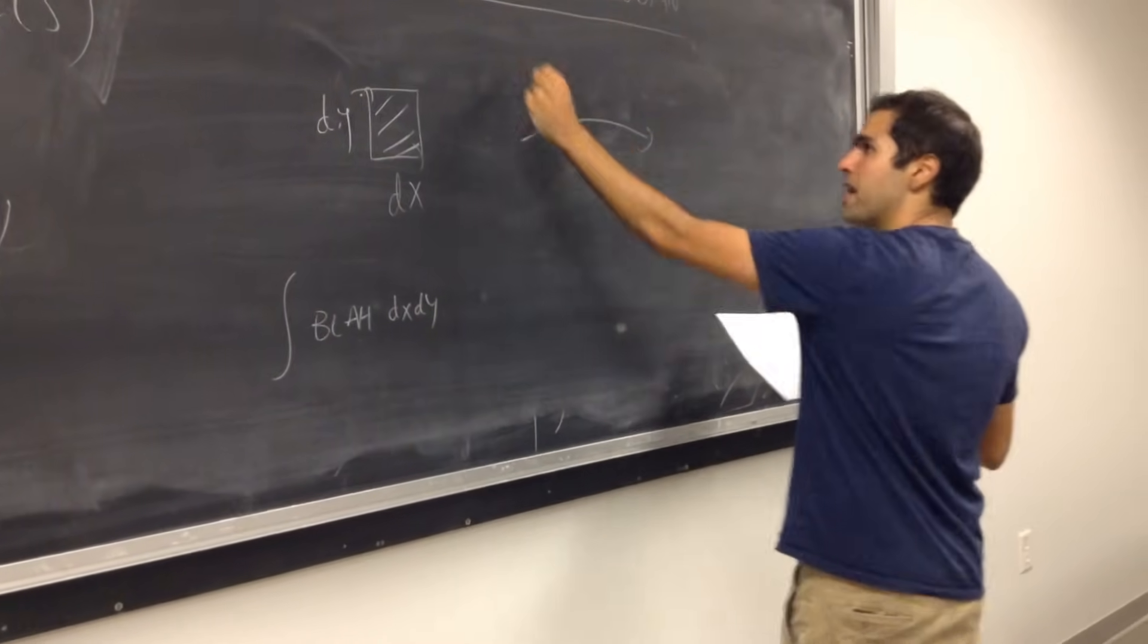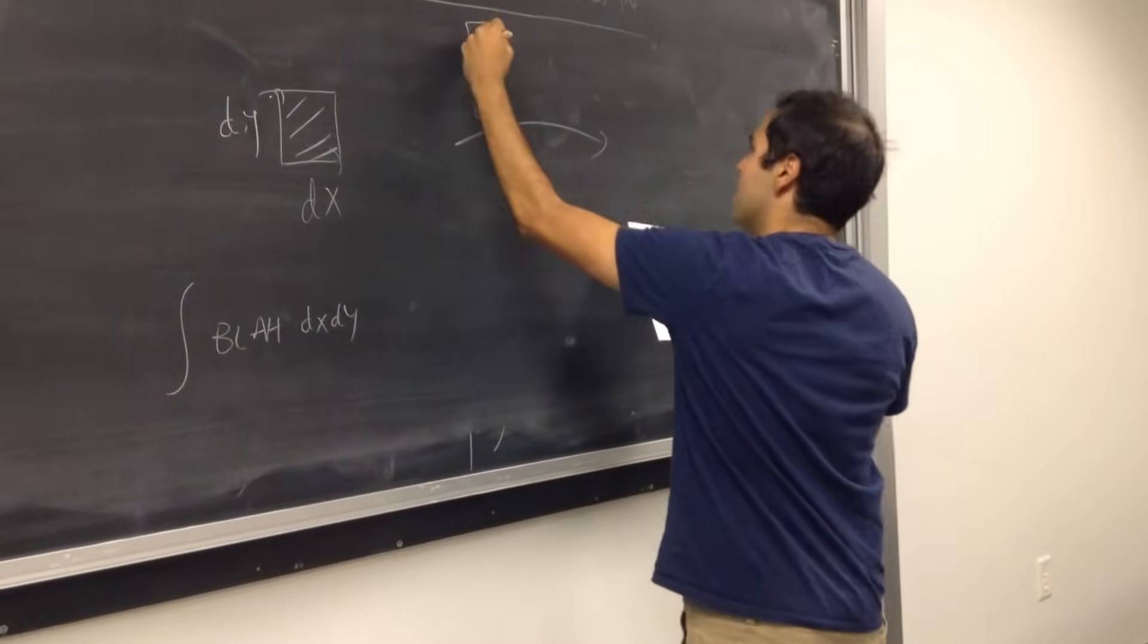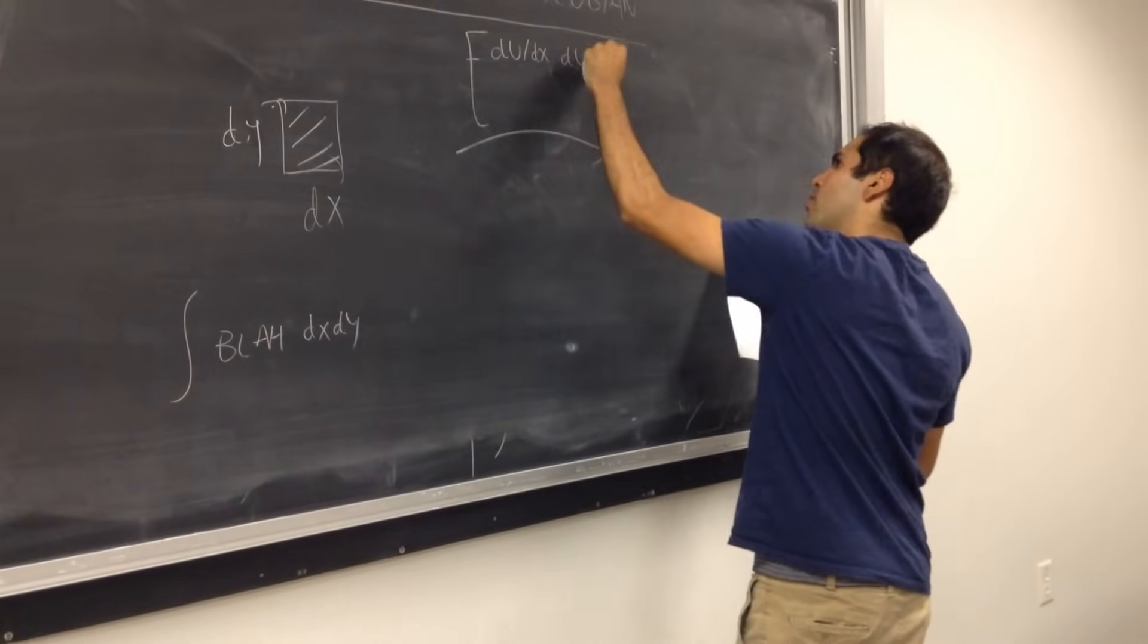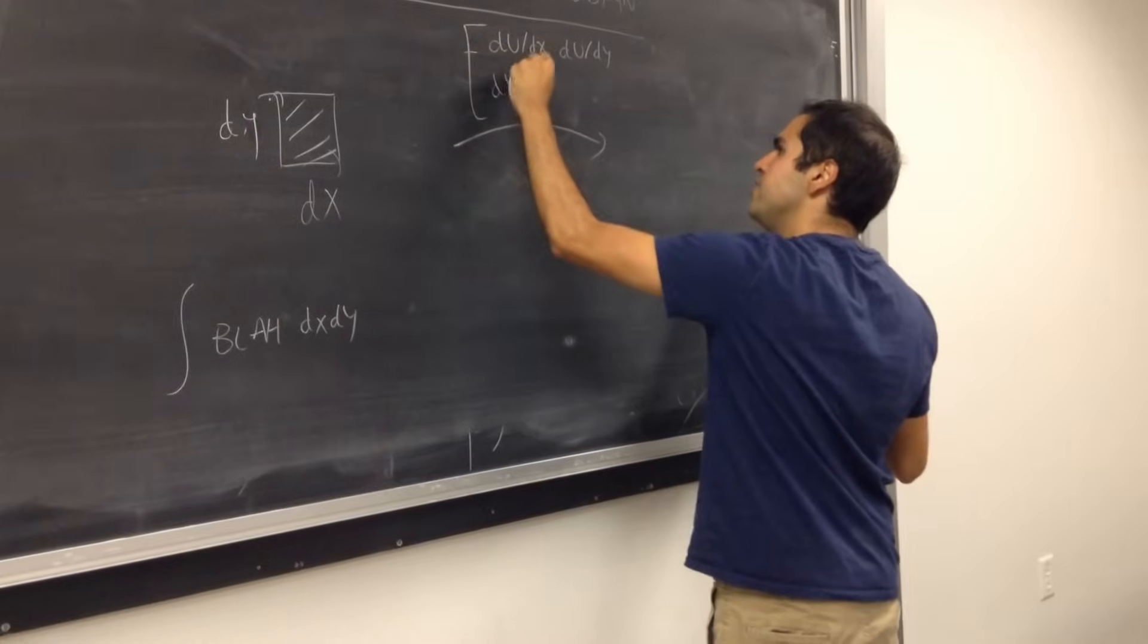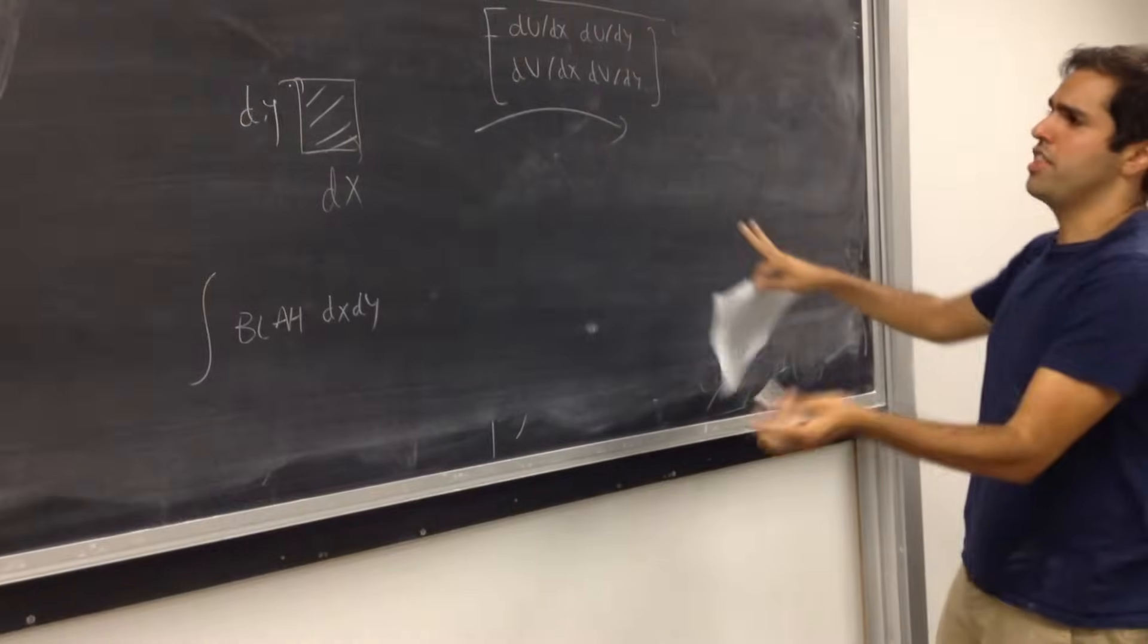If you apply the Jacobian to it, or maybe the matrix, if you want, du over dx, du over dy, dv over dx, dv over dy, you get another thing, okay? It's something like,